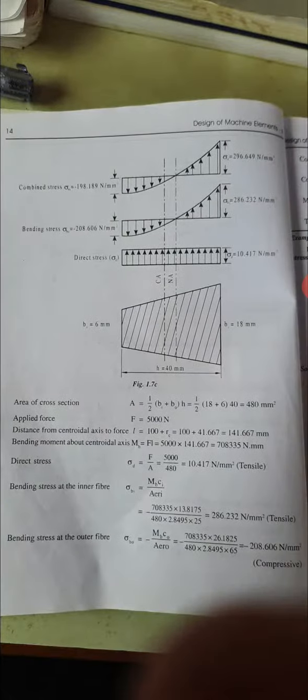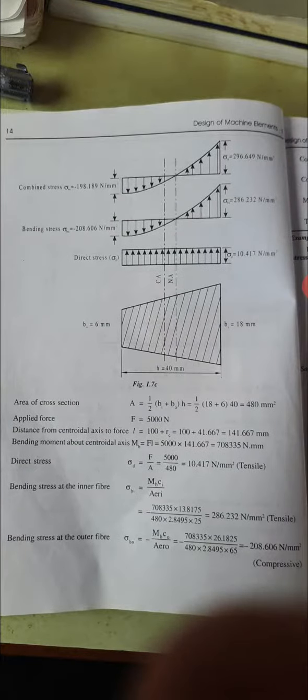Out of these two, maximum stress is τmax. Here is the stress distribution: direct stress, bending stress, and combined stress.